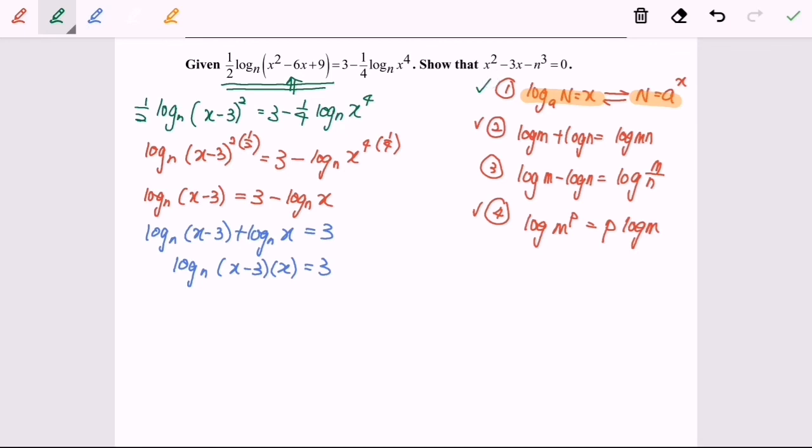I'm going to convert the log form into index form. So x minus 3 times x equals n to the power of 3. I'm going to expand. So x squared minus 3x minus n cubed equals 0.